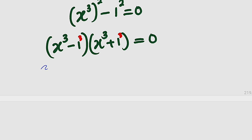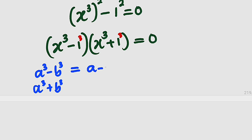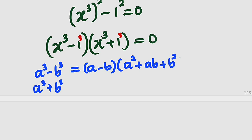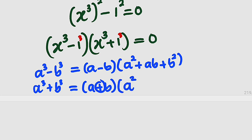Let me write the two formulas here. For a³ minus b³ and a³ plus b³, we have difference of two cubes and sum of two cubes. For the difference, you take a minus b, then multiply by a squared plus ab plus b squared. For the sum, we have a plus b multiplied by a squared minus ab plus b squared. This is the factorization.